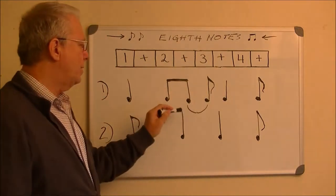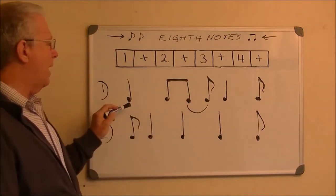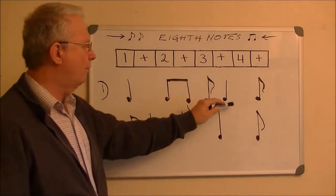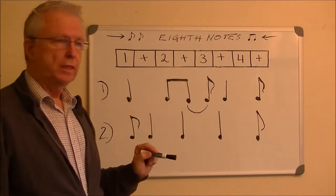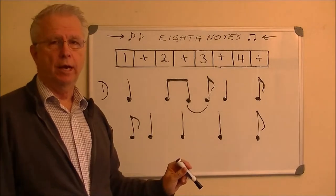Right here the tie covers the middle of the measure. You have a half note on this side and a half note on this side. If you don't use the tie, you might get something confusing like this rhythm at the bottom.